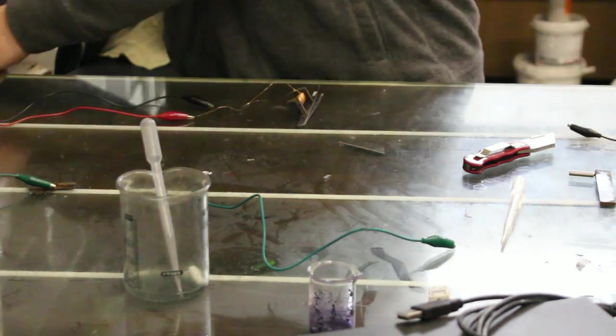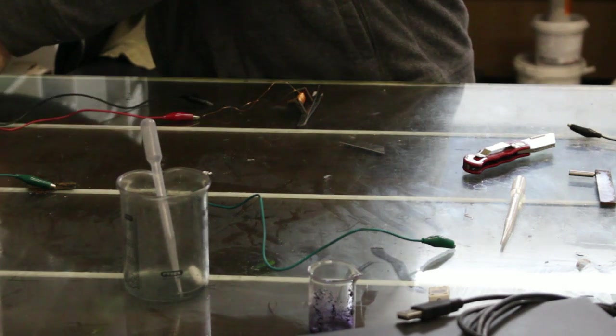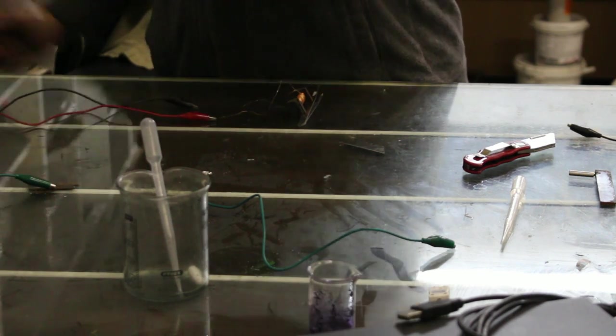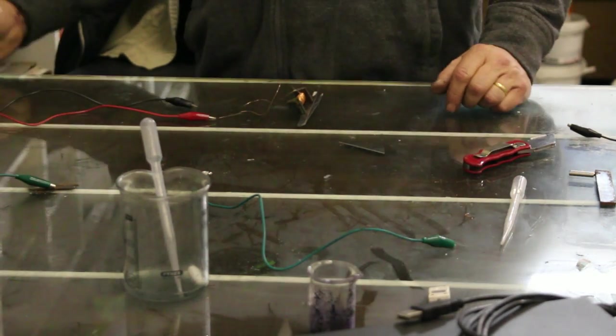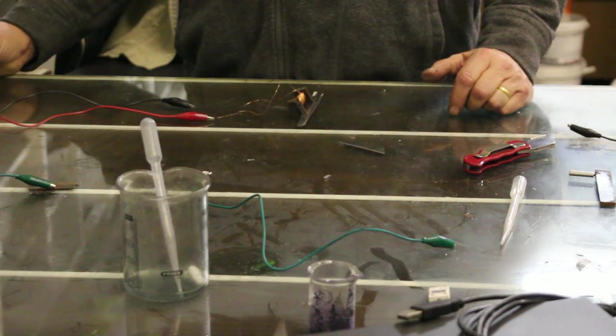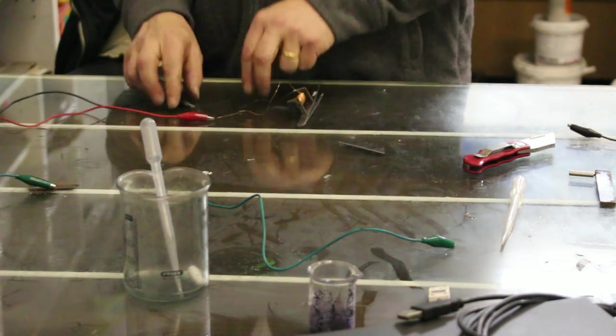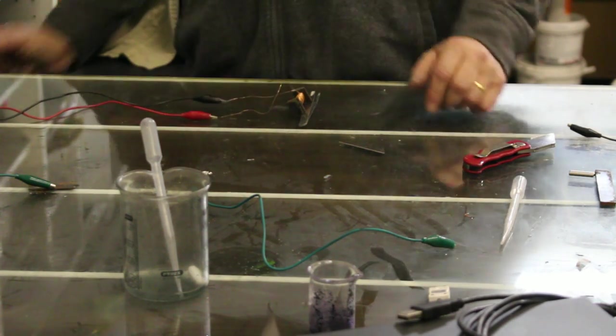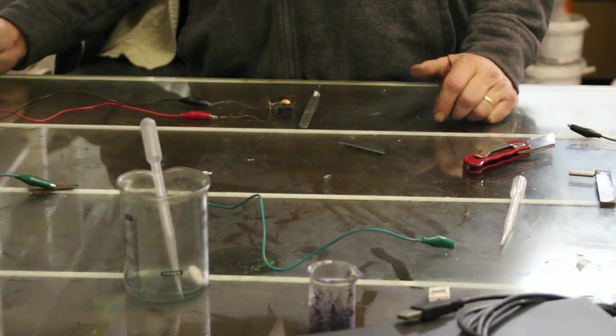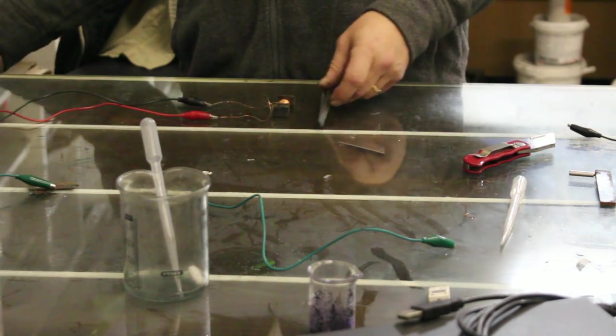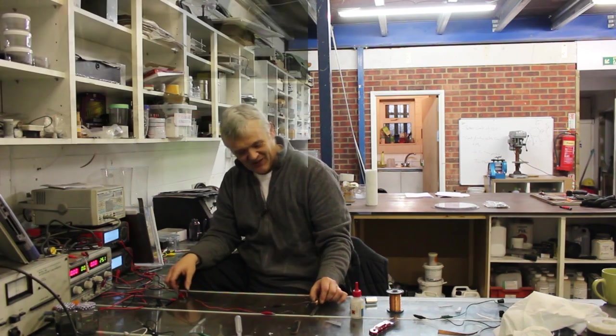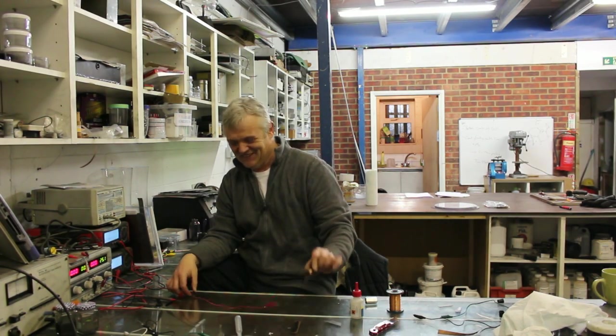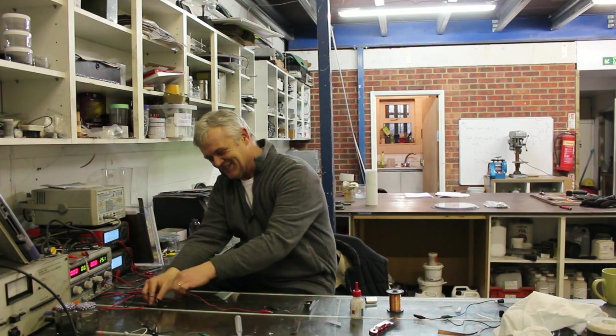So now if we reverse those again. Give it a little pulse. Oops. Make sure it's connected. Give it a little pulse. And then it loses its magnetism again. So there we go. Pulse it. It's magnetic. Swap it. Swap it and pulse it again. It'll lose that magnetism.